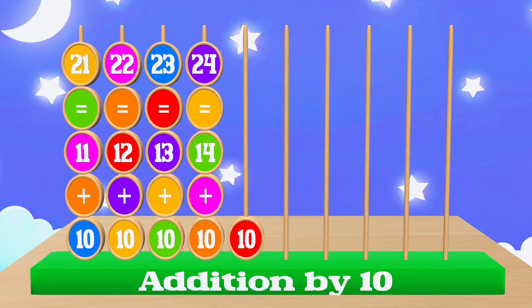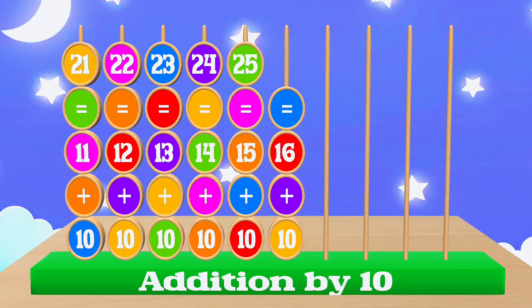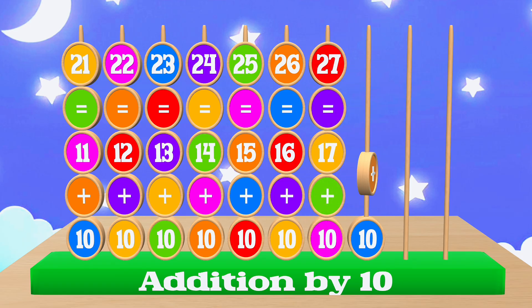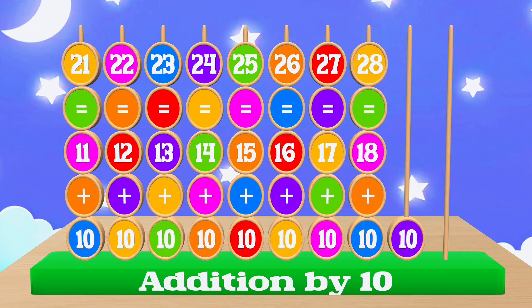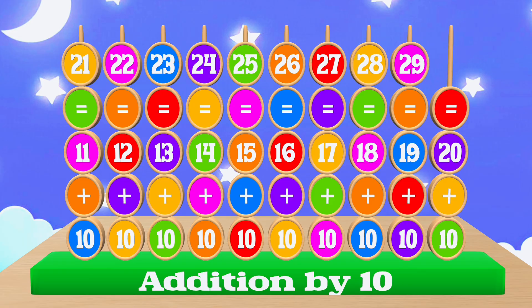10 plus 15 equals 25. 10 plus 16 equals 26. 10 plus 17 equals 27. 10 plus 18 equals 28. 10 plus 19 equals 29. 10 plus 20 equals 30.